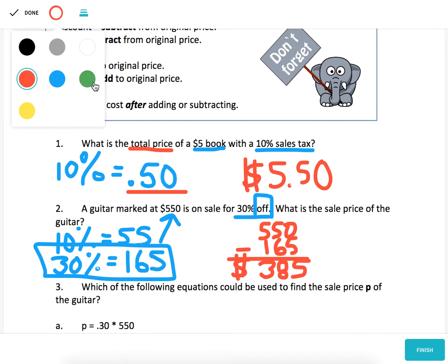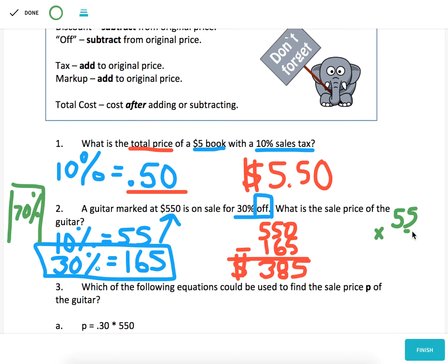One other way that you can solve discount problems is by realizing that when you take away 30%, what you're left with is 70% of the price. So instead of finding 30% and subtracting from the price, you could just go directly to find 70%. So if 10% was $55, if I do $55 times 7, I'll get 70% of the price of the guitar. And lo and behold, that comes out to $385, which is what we got when we subtracted 30%. And that makes sense because when you subtract 30%, you're left with 70%.